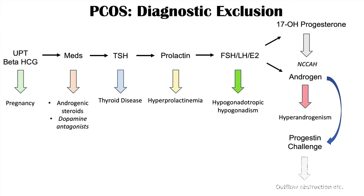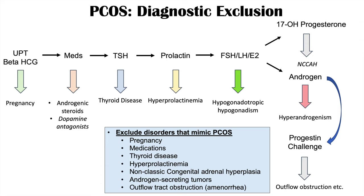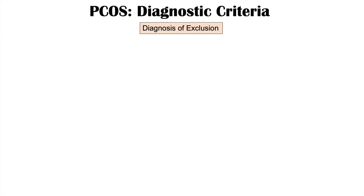In some cases you may want to do a progestin challenge to see if the patient has an outflow obstruction. It's important to exclude disorders that mimic PCOS, including pregnancy, certain medications, thyroid disease, hyperprolactinemia, non-classic congenital adrenal hyperplasia, or an androgen-secreting tumor. This guideline can often be used to evaluate amenorrhea and any issues with menstrual cycles. PCOS is a diagnosis of exclusion — we must exclude all other possible causes.